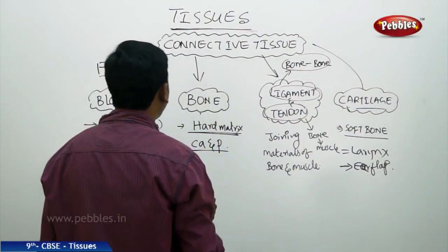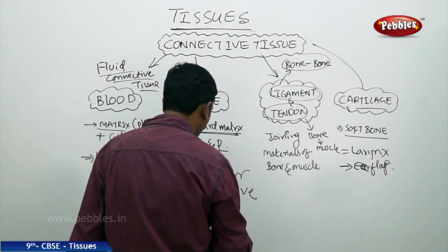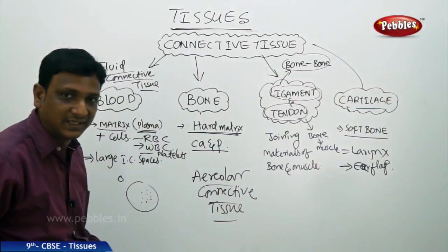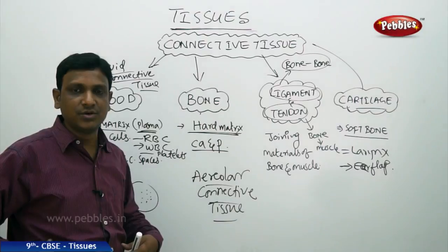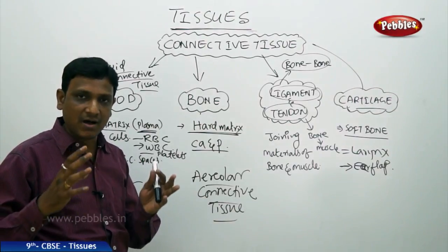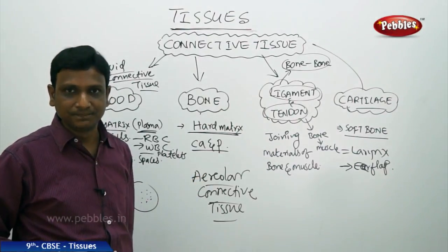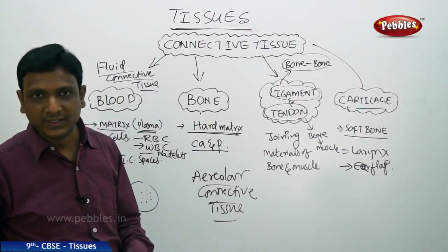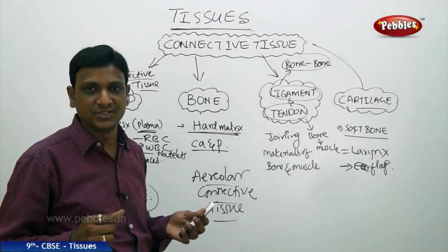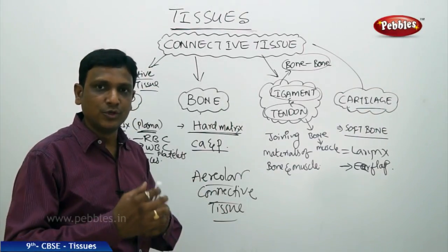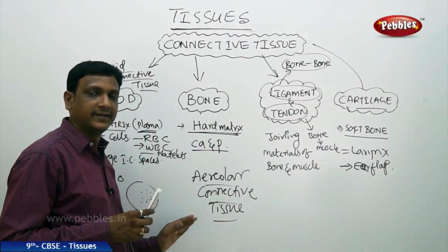Another connective tissue is areolar connective tissue. This tissue connects different parts of the body within cavities. In the thoracic cavity you have lungs and heart, and in the abdominal cavity you have stomach and intestines. These organs are kept in their positions — your heart does not fall, your lungs are not displaced, even when you jump, sit, or go upside down. Their positions remain stable because they are packaged by areolar connective tissue.